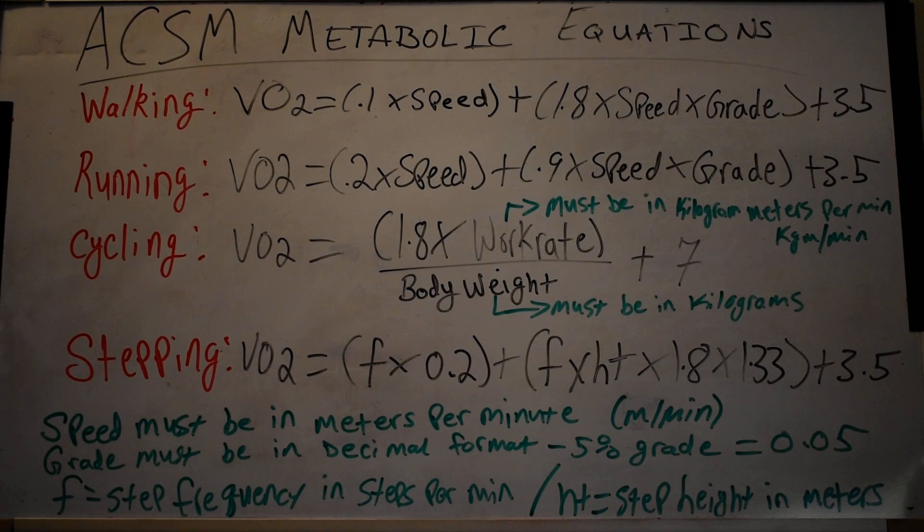The biggest trip up with the cycling equation is when a question asks you something about cycling and they throw in watts. You cannot plug watts into this equation even though watts are a measurement of power and a measurement of intensity and a work rate—it does not fit in this equation. So you'll have to take whatever watts they give you, say it's 100, and you'll have to multiply that by 6 to get 600 kgm per minute.